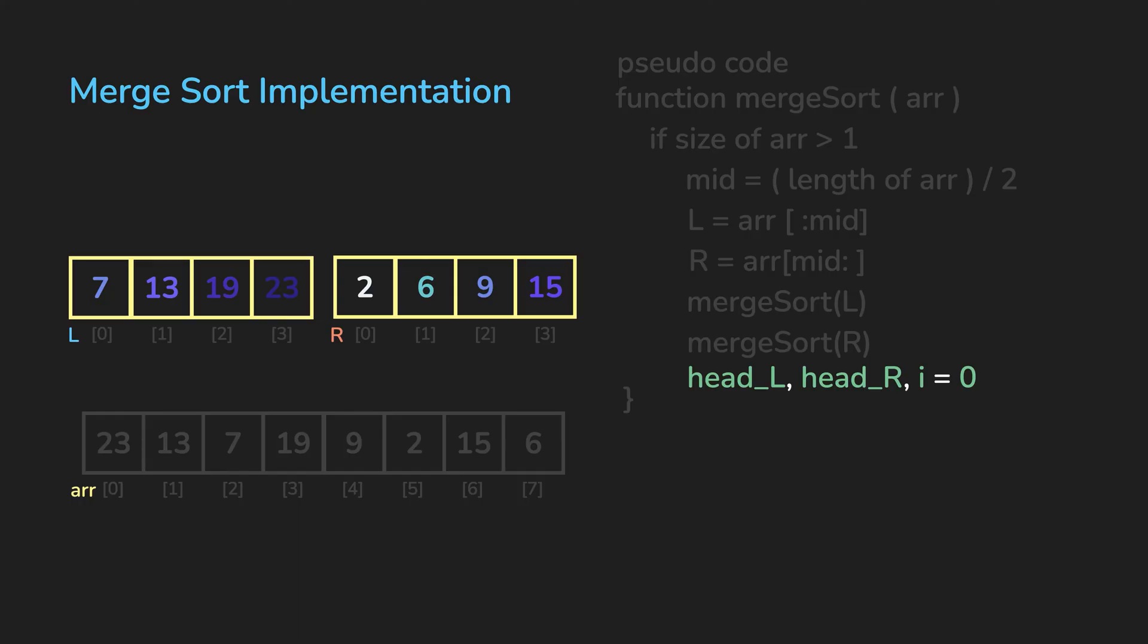Let's set three variables that are each initialized to the first element of each array. head_L would point to the head of array L. head_R would point to the head of array R. And i would point to the head of our original array, which we will overwrite.